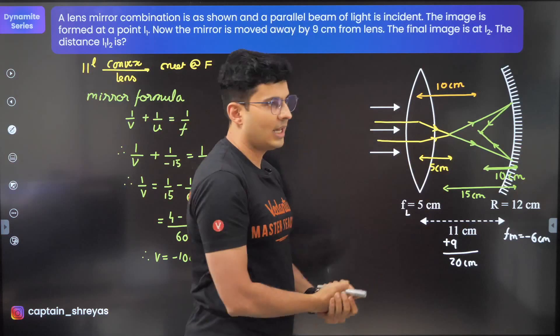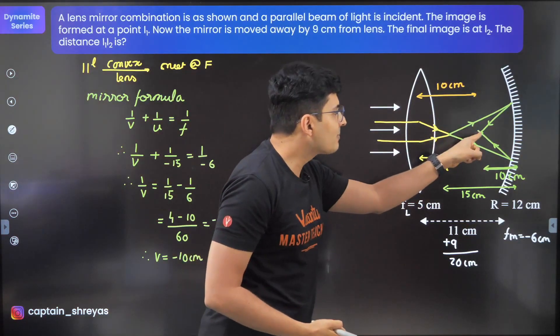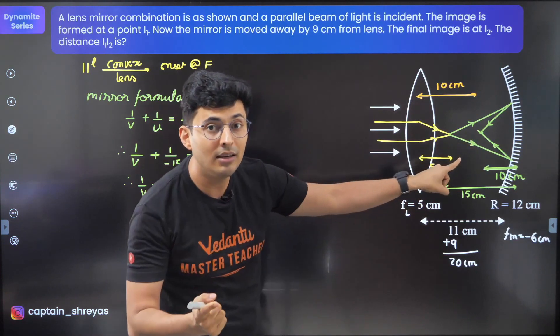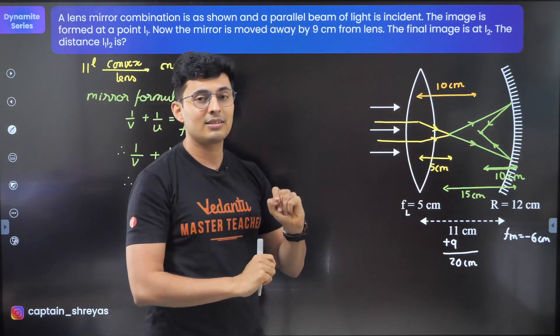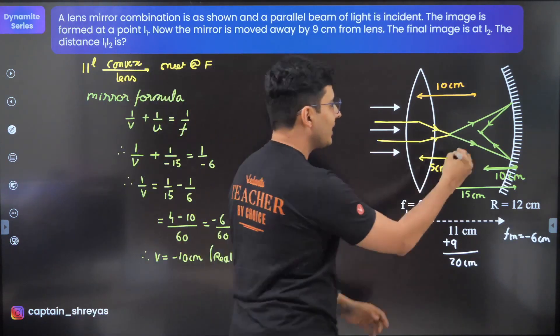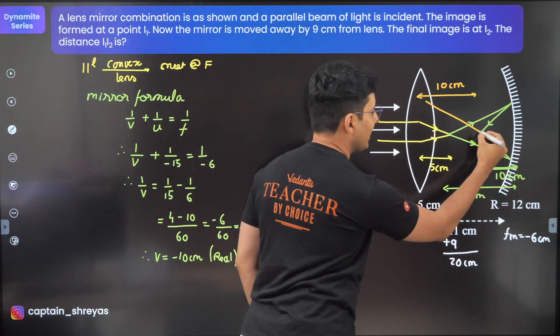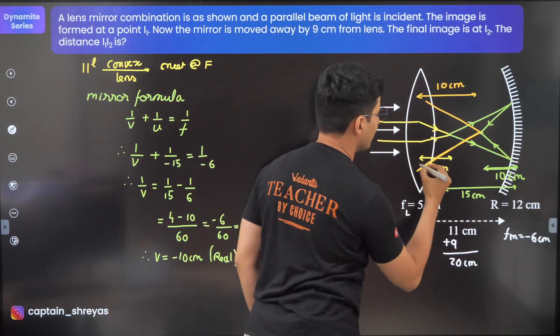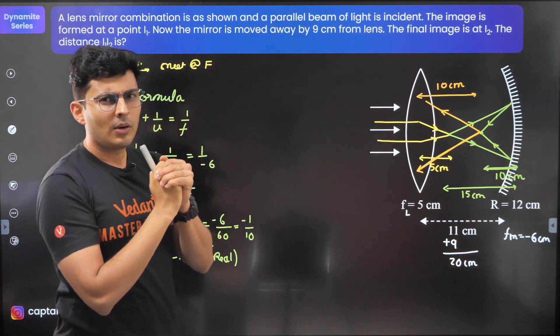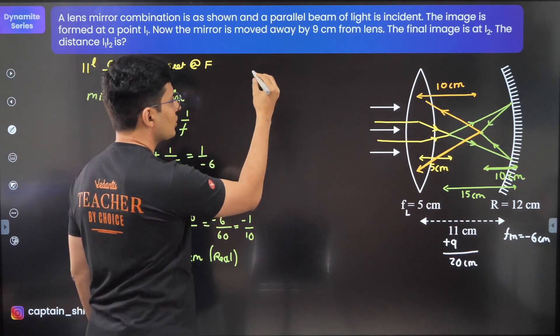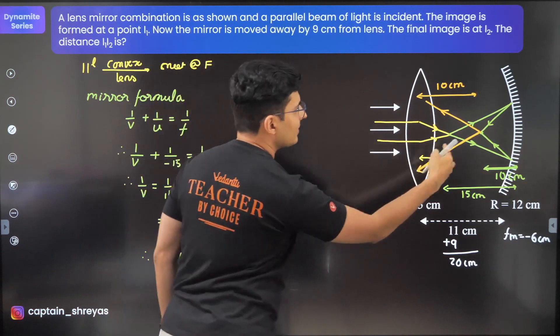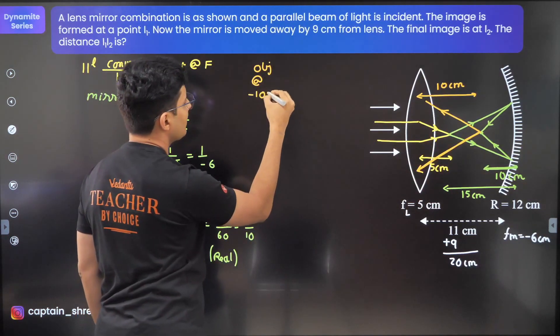This point where the image of the mirror is formed will be the object for the lens. Remember, image from one is the object for the next thing. The rays will continue, but where will they meet? The object distance is minus 10 centimeters.